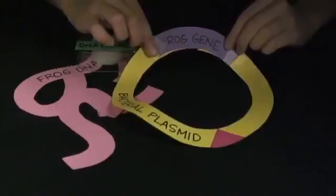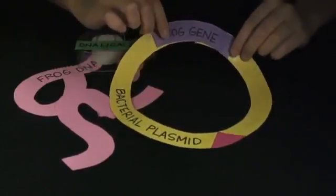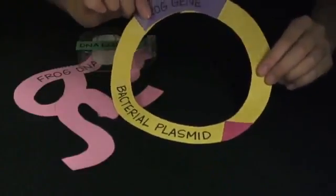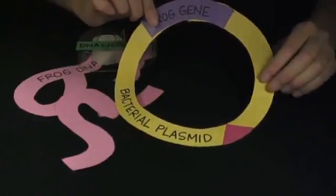Now another important thing about the plasmid itself is that it carries a marker that makes it resistant to a certain kind of antibiotic called tetracycline. This will come in handy in a little bit.